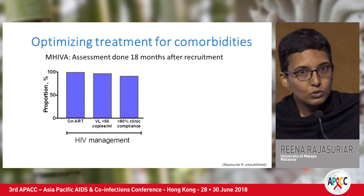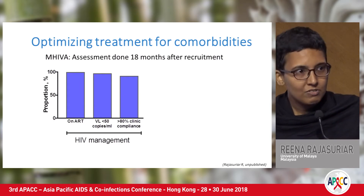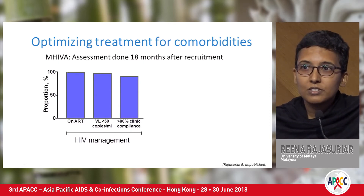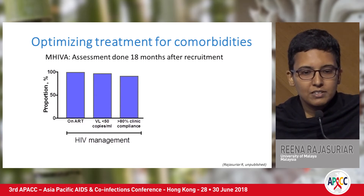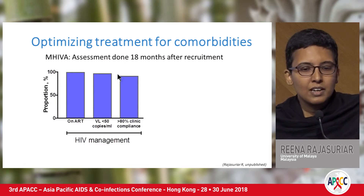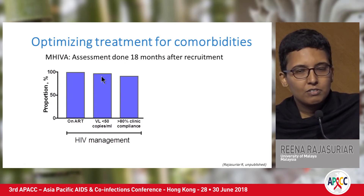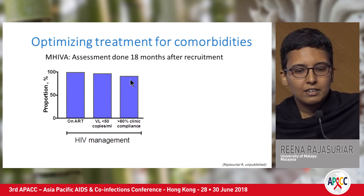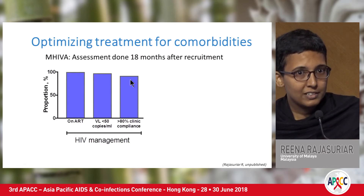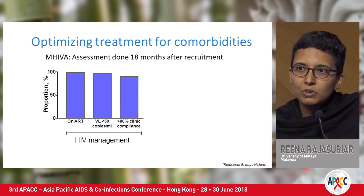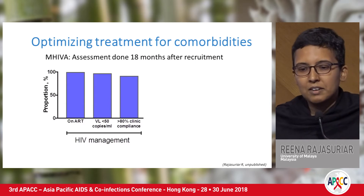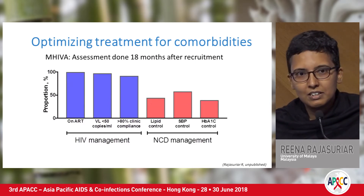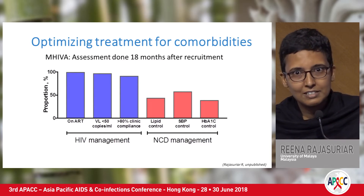We also looked at our HIV-related parameters. Since the inclusion criteria required all patients to be on treatment, 18 months down the line all patients remained on treatment, about 97% remained virologically suppressed, and about 92% had more than 80% clinical compliance. So we seem to be doing very well in HIV management, but there's a lot of room for improvement when it comes to addressing long-term complications and NCDs.